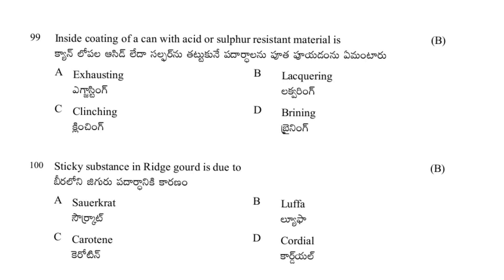Inside coating of a can — which acid or sulfur-resistant material is used? The process is lacquering, clenching, or brining. The correct process for inside coating of cans against acid or sulfur is lacquering.